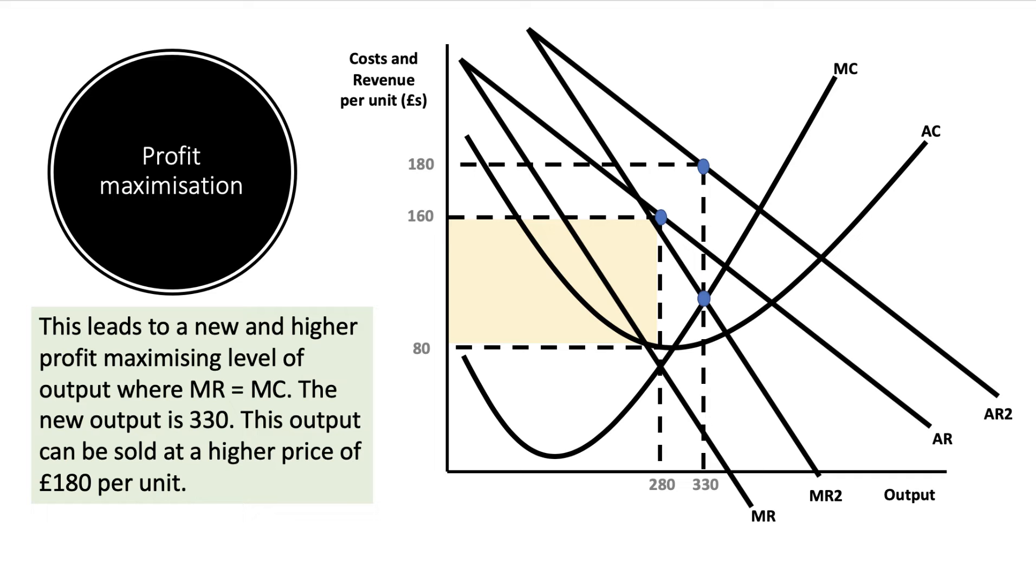This is obviously good news for profit. We just need to work out the unit cost first. Once we've found the average cost of producing 330 units, which I've assumed a little higher at 85 pounds per unit, we can now show the profit in the shaded area. Compare the yellow area originally with the new area in green here.